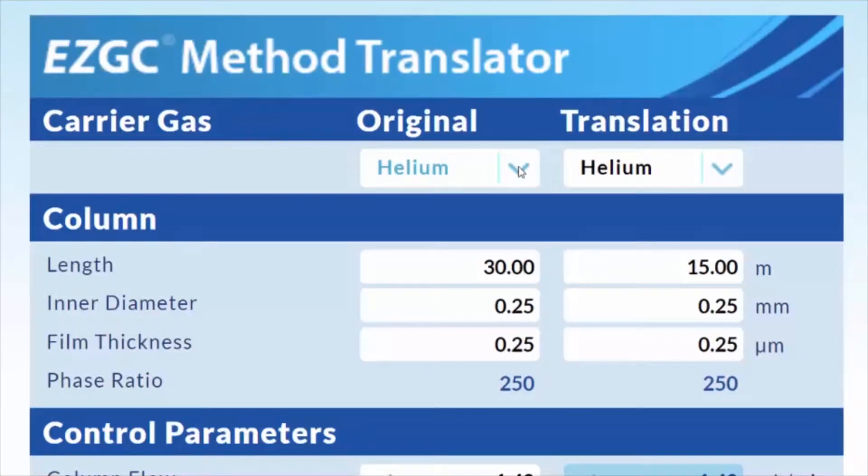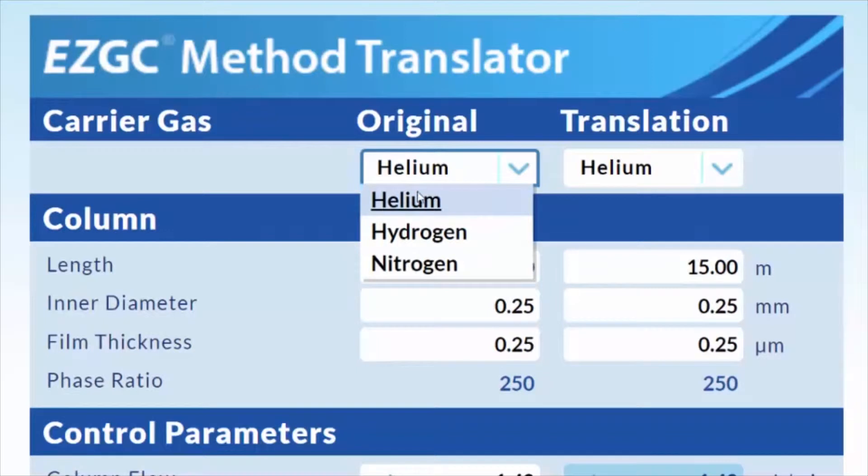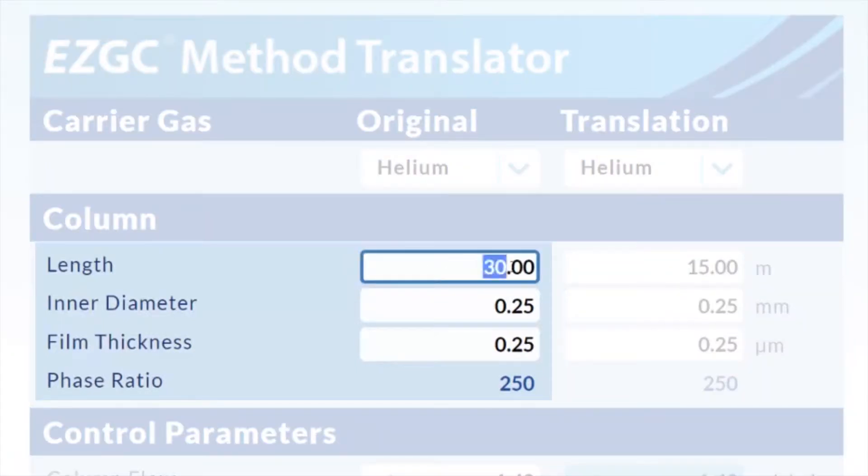Start by selecting the correct carrier gas for your method. Next, enter your current column dimensions.